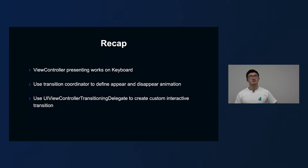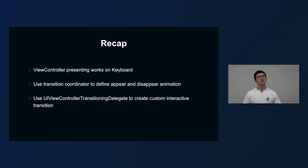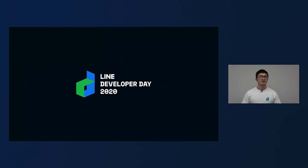So here are the takeaways of this session. First, view controller presenting works on keyboard — if you need to do something similar, you can consider trying this. Second, we can use the transition coordinator to define appear and disappear animations alongside the transition animation. Third, if you want to create a custom interactive transition, you need to implement UIViewControllerTransitioningDelegate. That's all for this session. Thank you very much.